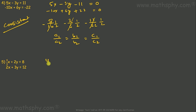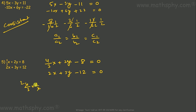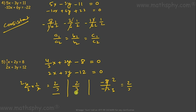Fifth pair: (4/3)x + 2y - 8 = 0 and 2x + 3y - 12 = 0. Here a1/a2 = (4/3) × (1/2) = 2/3, b1/b2 = 2/3, and c1/c2 = -8/-12 = 2/3. Since a1/a2 equals b1/b2 equals c1/c2, this gives coincident lines — the system is a consistent solution. All five done.